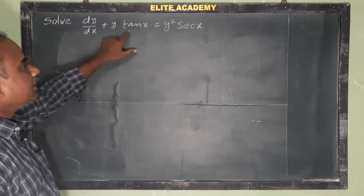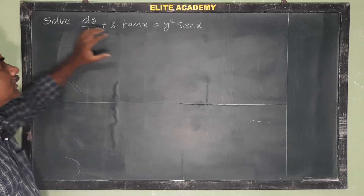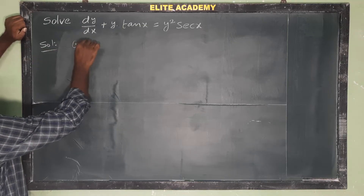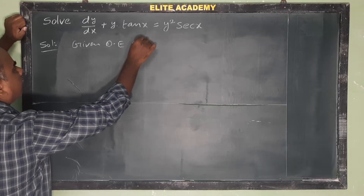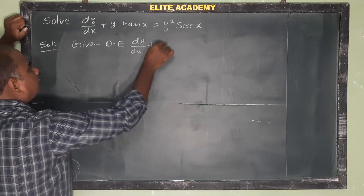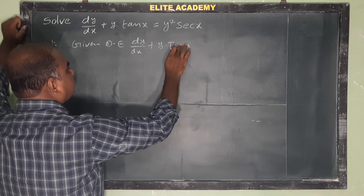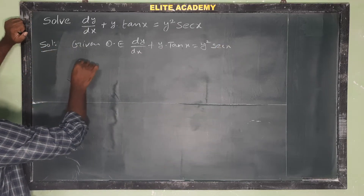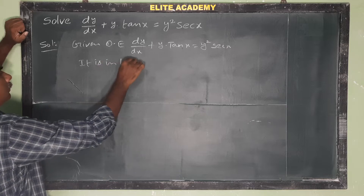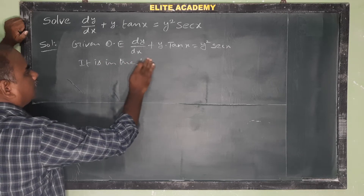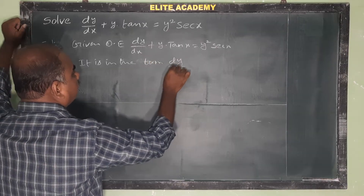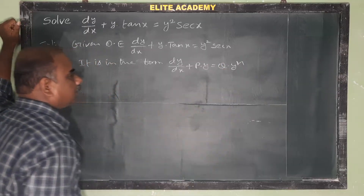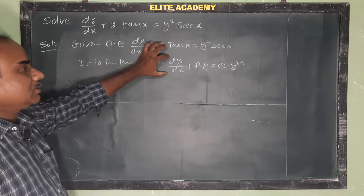Solve dy/dx + y·tan(x) = y²·sec(x). Given differential equation dy/dx + y·tan(x) = y²·sec(x). It is in the form dy/dx + P·y = Q·y^n, which is the Bernoulli equation in terms of y.